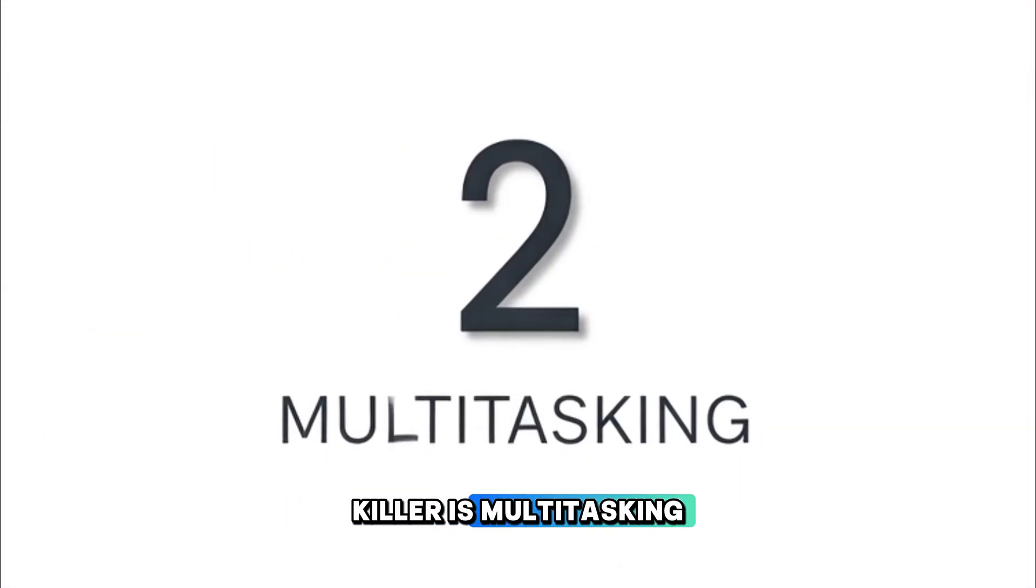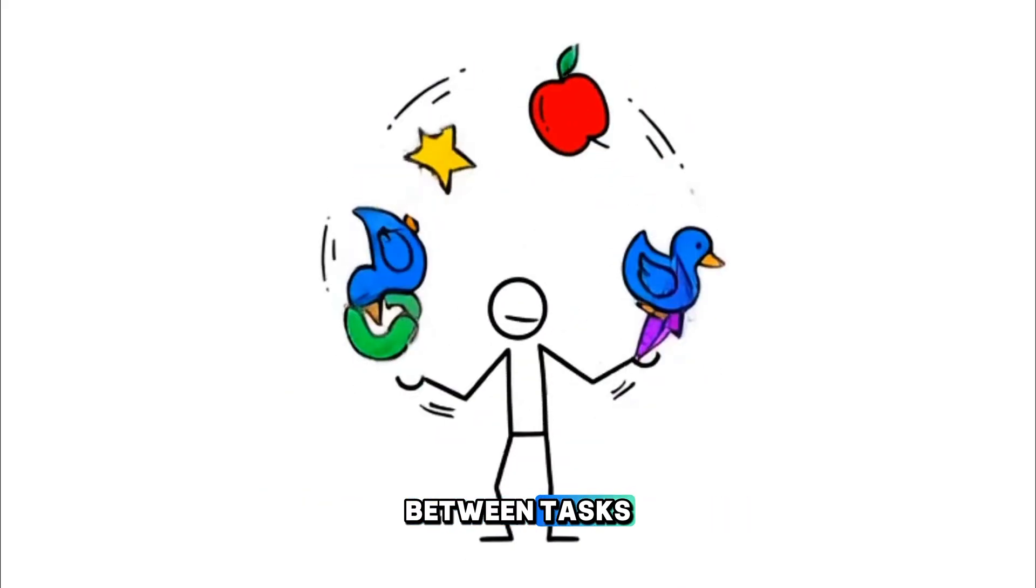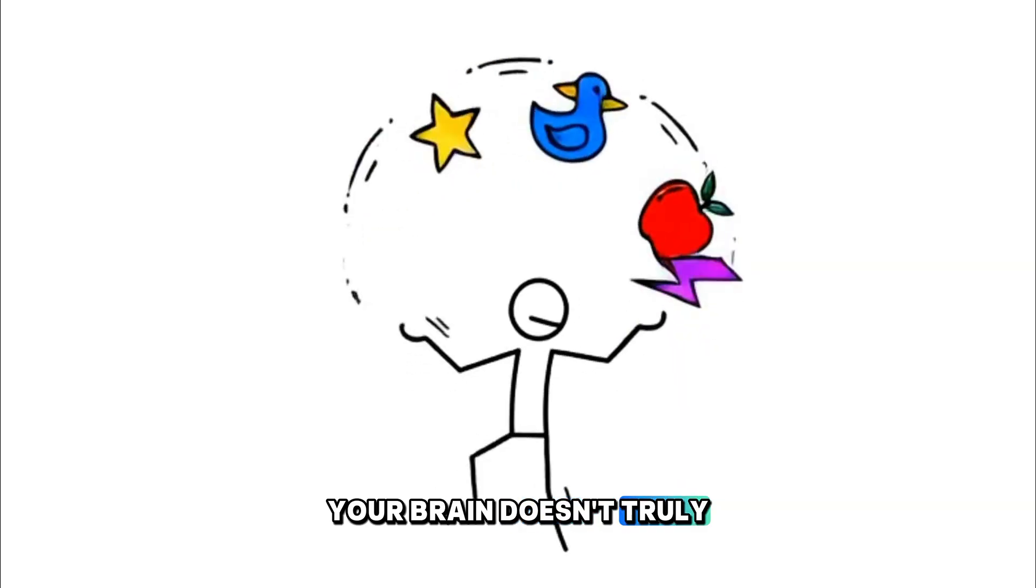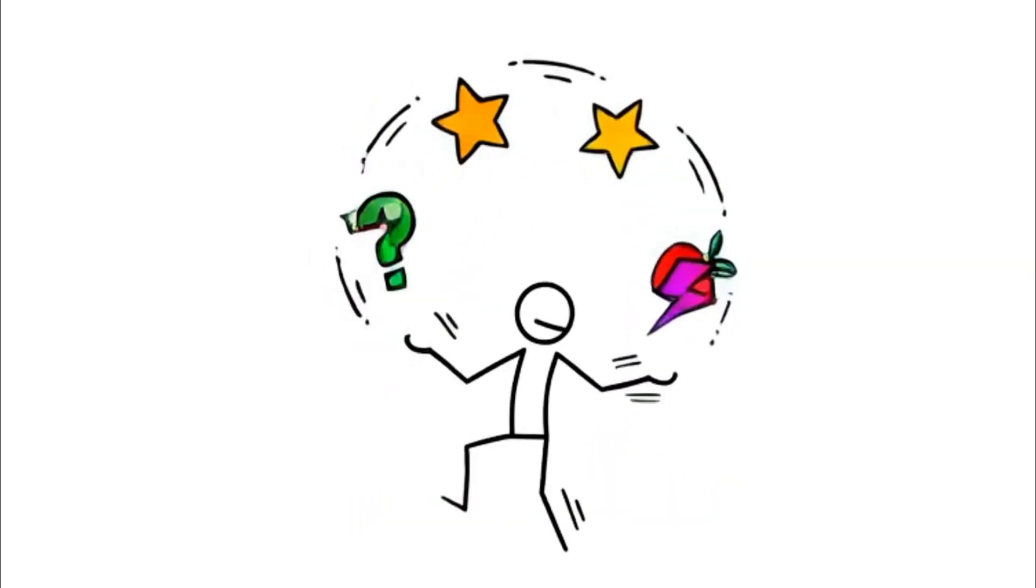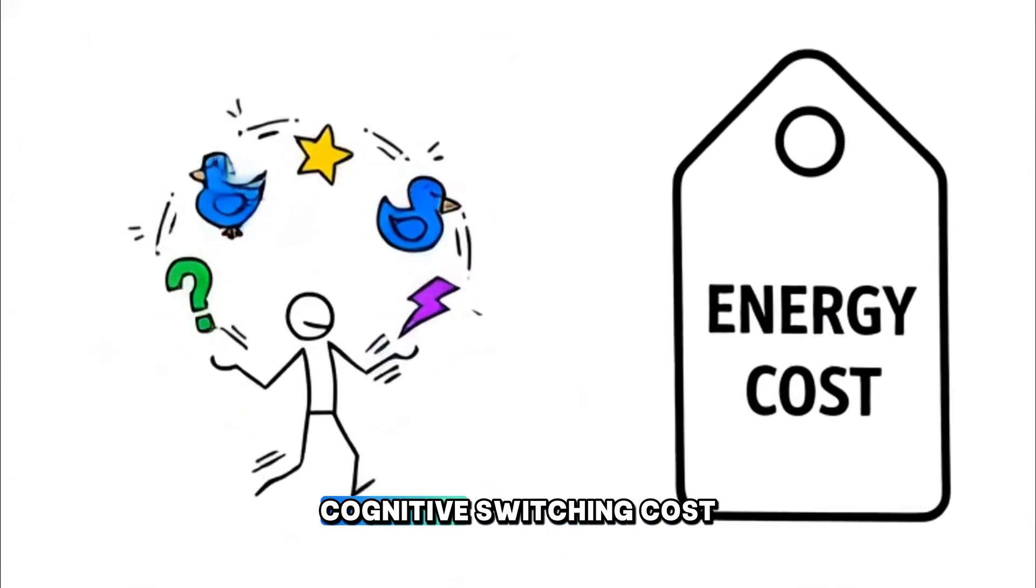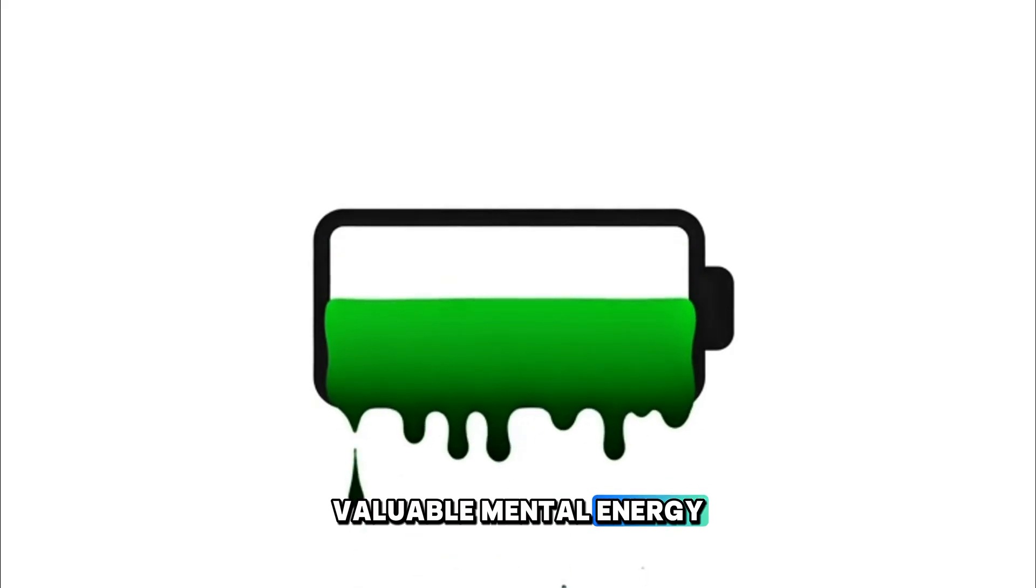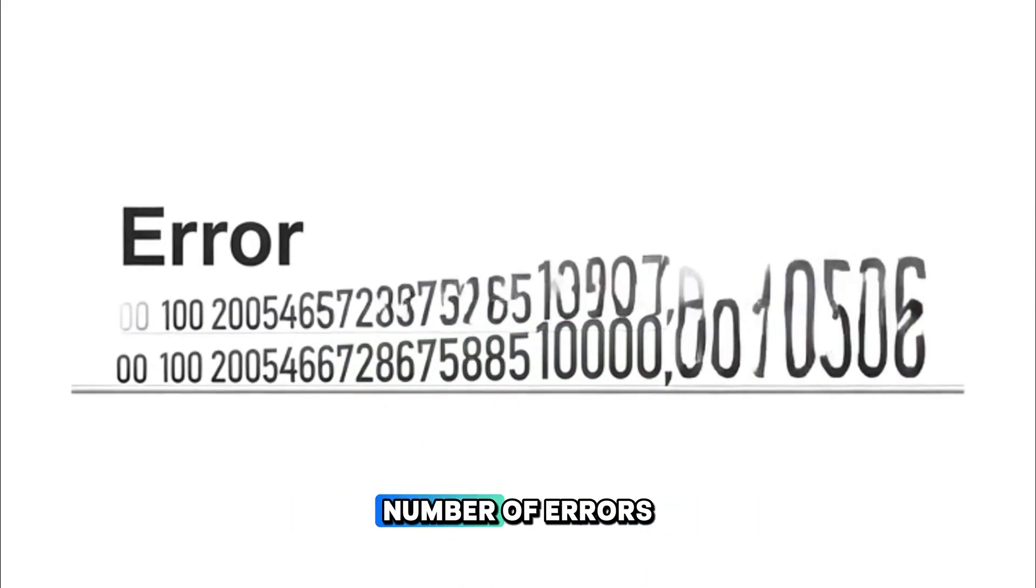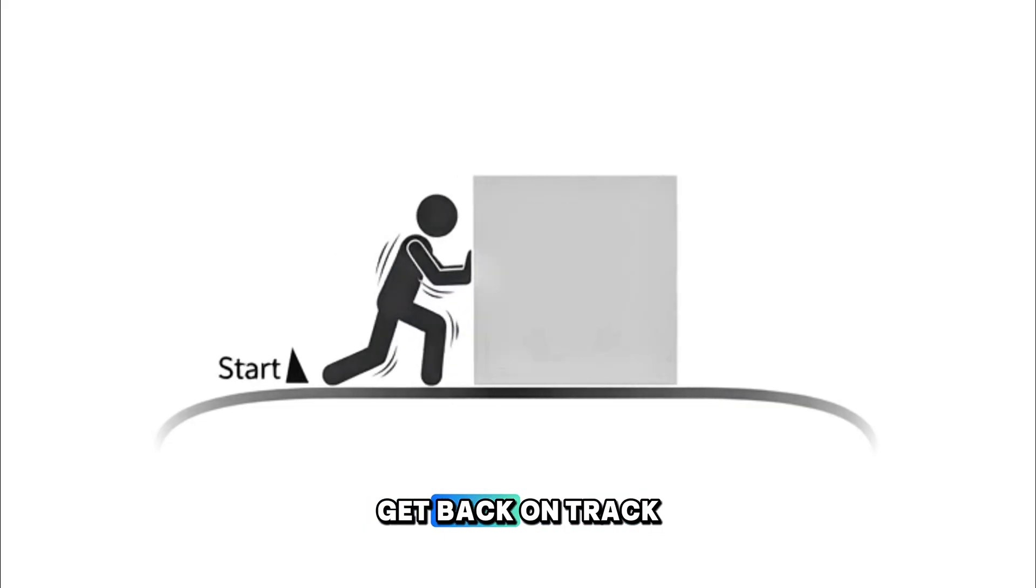The second killer is multitasking as an identity—the person who constantly switches between tasks. Your brain doesn't truly multitask; it rapidly task switches. Every switch incurs a cognitive switching cost. This means you burn valuable mental energy and significantly increase the number of errors, forcing your brain to work harder just to get back on track.